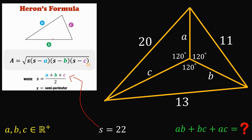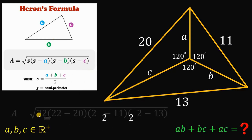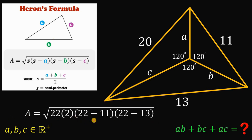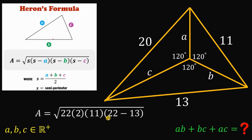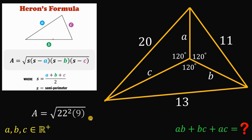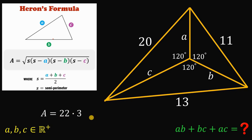Now we can find the area using Heron's formula. The area equals the square root of 22 times (22 minus 20) times (22 minus 11) times (22 minus 13), which is the square root of 22 times 2 times 11 times 9. Notice that 2 times 11 equals 22, so we have 22 squared times 9, and 9 equals 3 squared. The square root of 22 squared times 3 squared equals 22 times 3, which is 66. So the area of this triangle is 66.